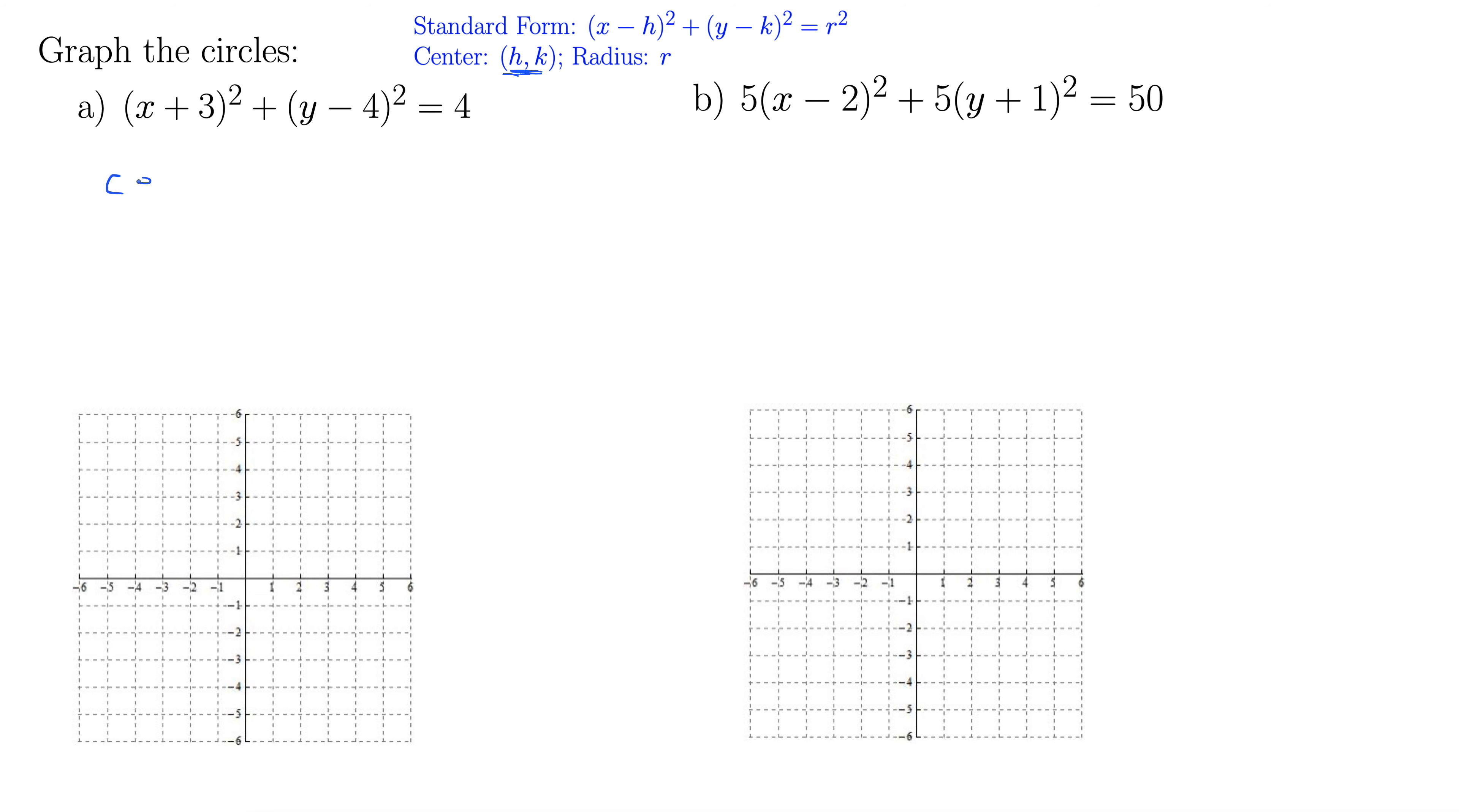So in part a, we have a center. Our center here is (-3, 4). And the radius is 2, right? Because 4 is r². So we take the square root of 4 to get the radius 2.